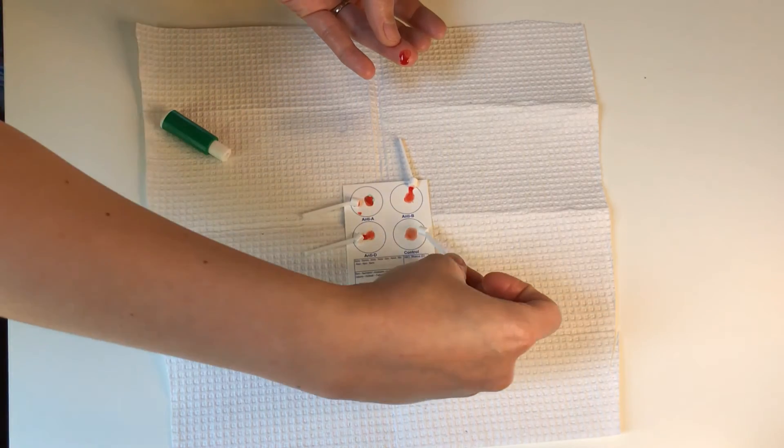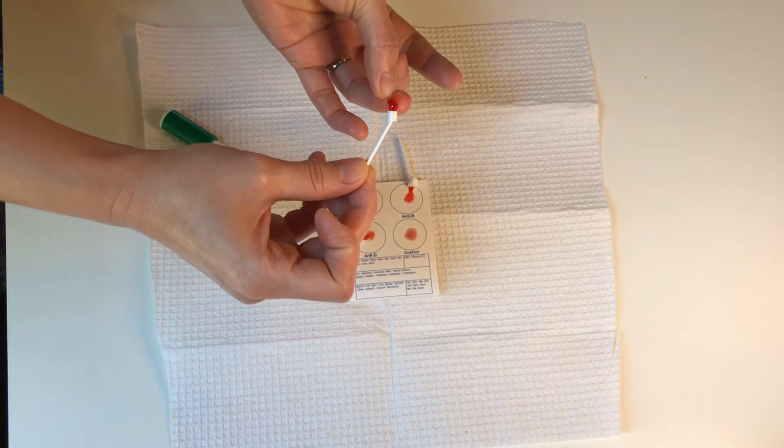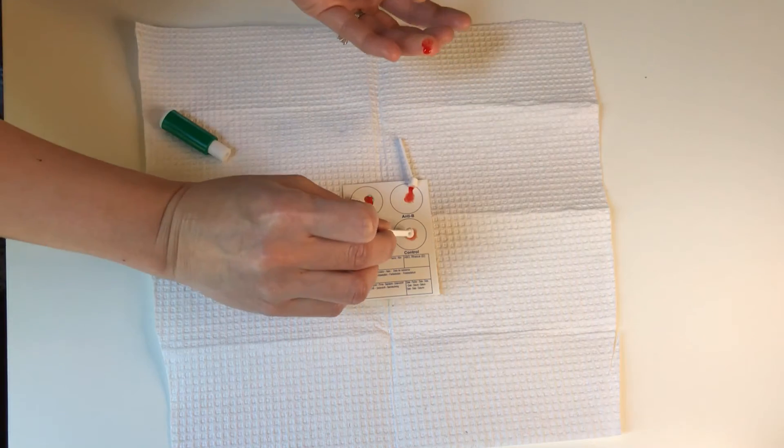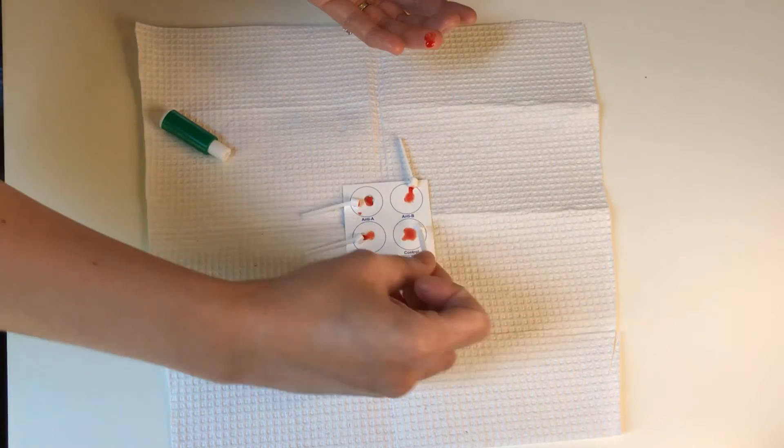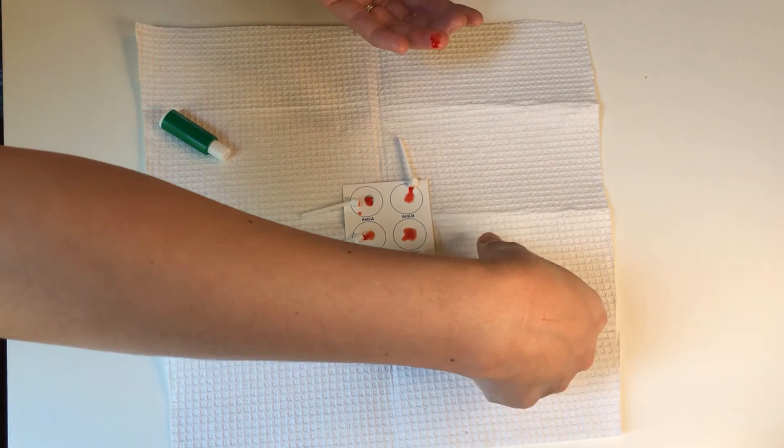We might want a little bit more blood on that one. Go ahead. That's okay. Do it that way. Put it on the control and then do the A one. Not the A, sorry, the D. Get a little bit more in there.